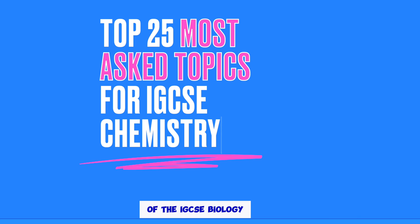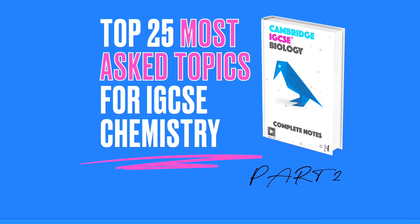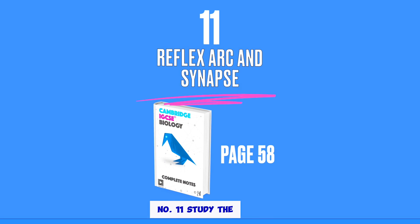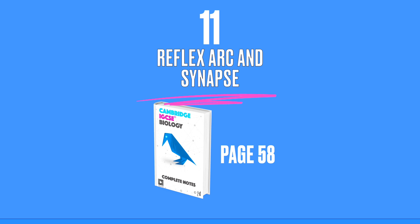This is part 2 of the IGCSE Biology Most Frequently Asked Questions. Number 11: study the neurons involved in the reflex arc and the synapse.